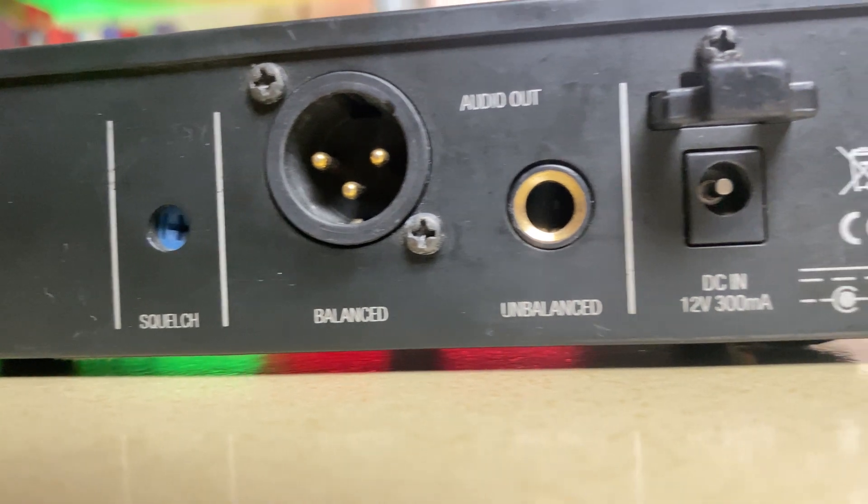The two primary forms of audio connections used in live sound and studio applications are balanced and unbalanced audio connections. That's what we'll be talking about in this video. At the end of this video, I'll test both of them so we can hear how much of a difference one makes over the other when it comes to eliminating noise and external interference.